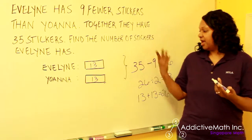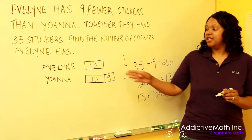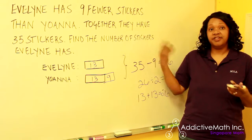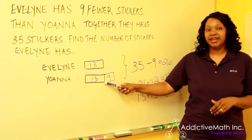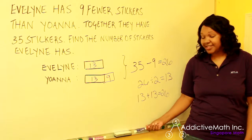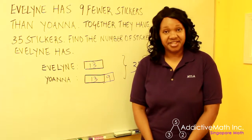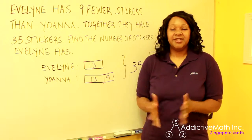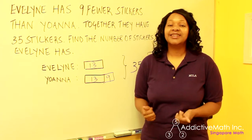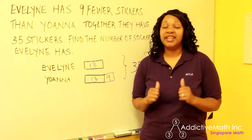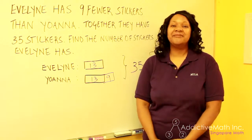So to solve the problem, let's put it back like we originally had it. Johanna has nine more than Evelyn, or Evelyn has nine fewer. That lets us know that Evelyn has 13 stickers and Johanna has 22. Thanks so much for watching. I'm so glad you joined me. I want to leave you with some motivation — repeat after me: I am brilliant, I am confident, and I can solve any math problem that comes my way. Thanks for watching and I'll see you on the next Math Monday.